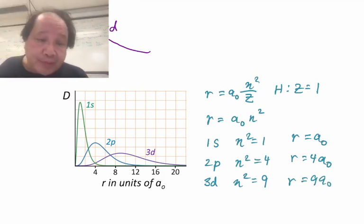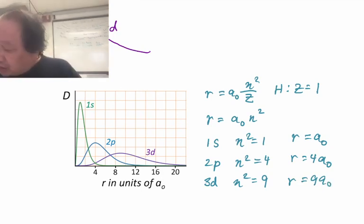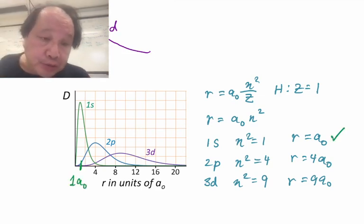And let's see how this compares to what the d-function shows. So if we look at the 1s, the average value is right around here. And that is at 1a0, just as is numerically correct.